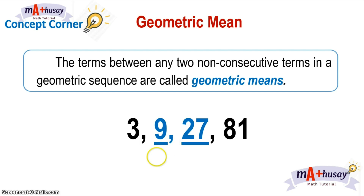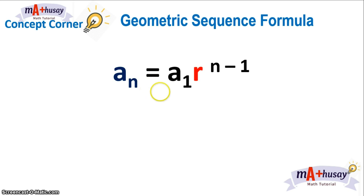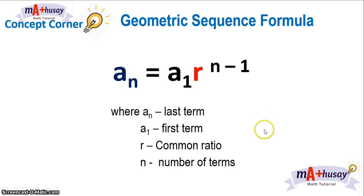So, how do we solve for the geometric mean? We will still use the geometric sequence formula: a sub n equals a sub 1 times r raised to n minus 1. In order to solve for the geometric mean, we need to solve first the common ratio, then find the geometric mean using r.